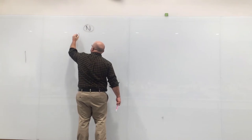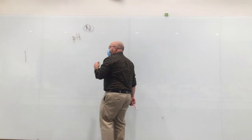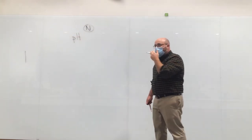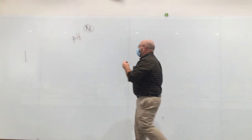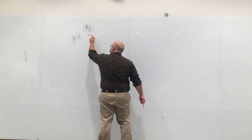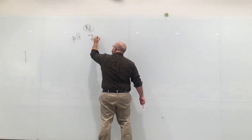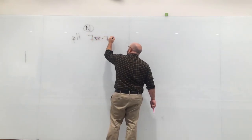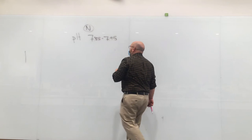Let's go to pH first. What's normal for pH? 7.35 to 7.45.